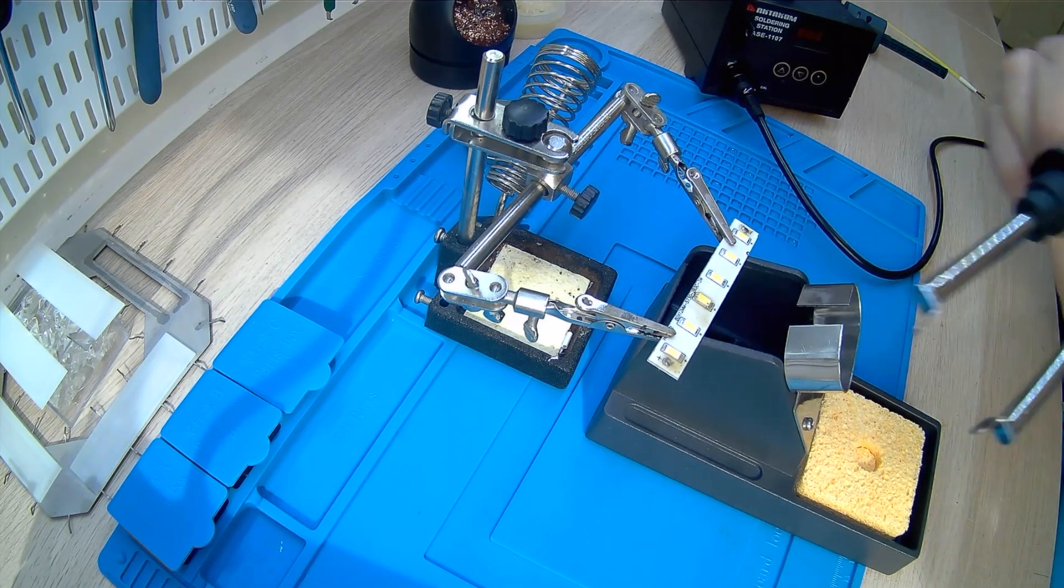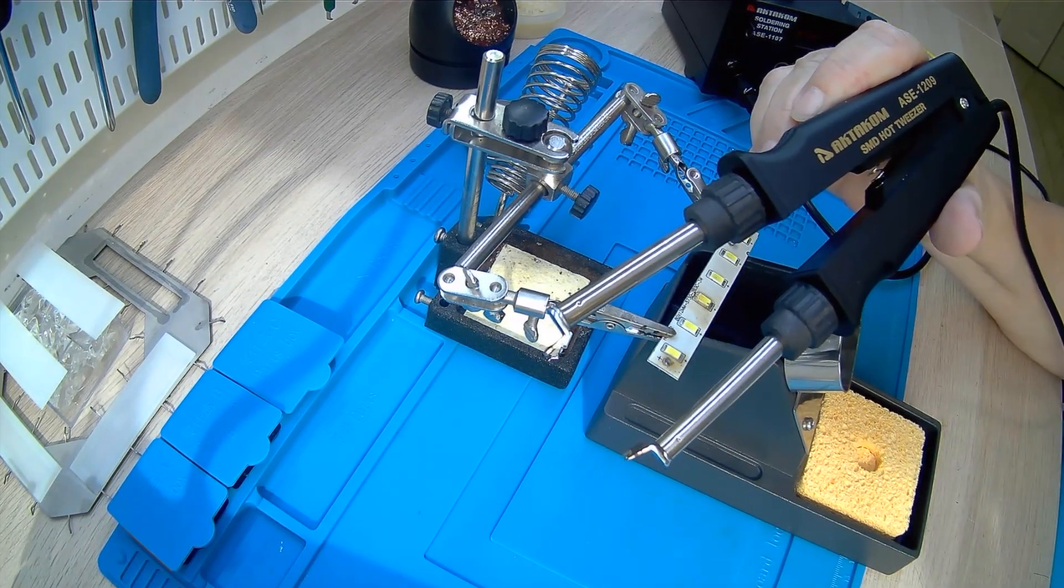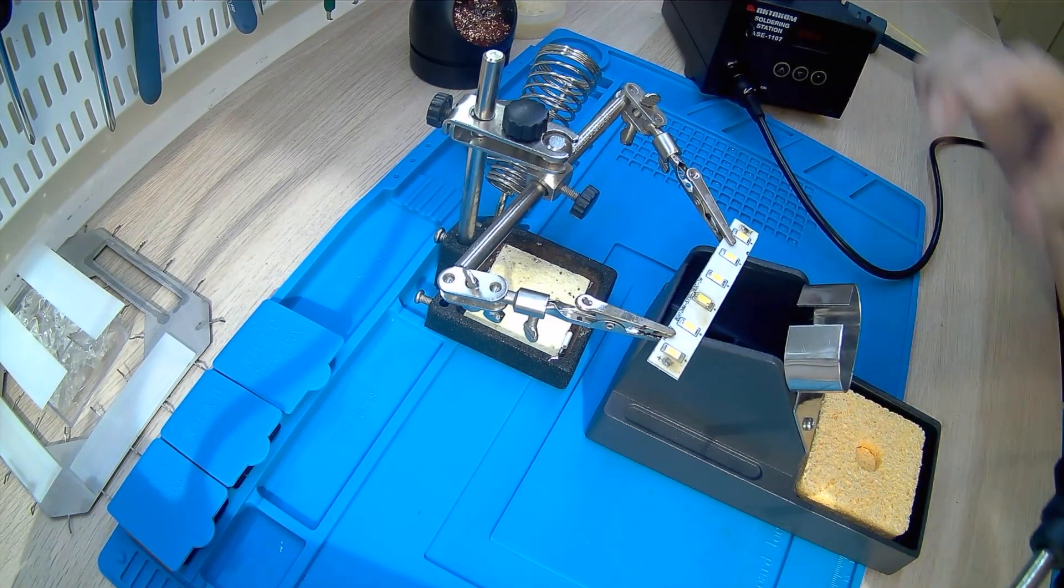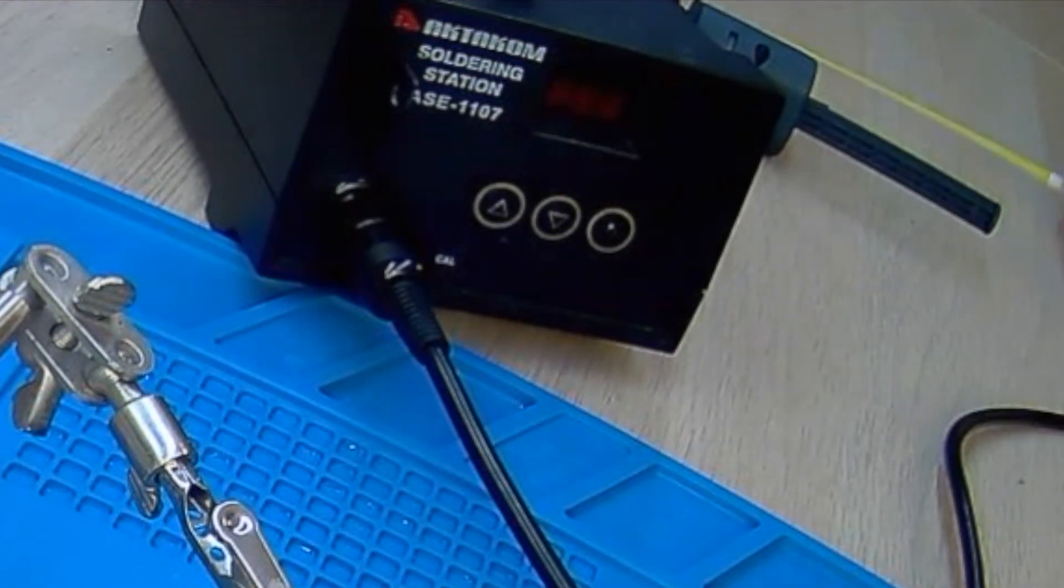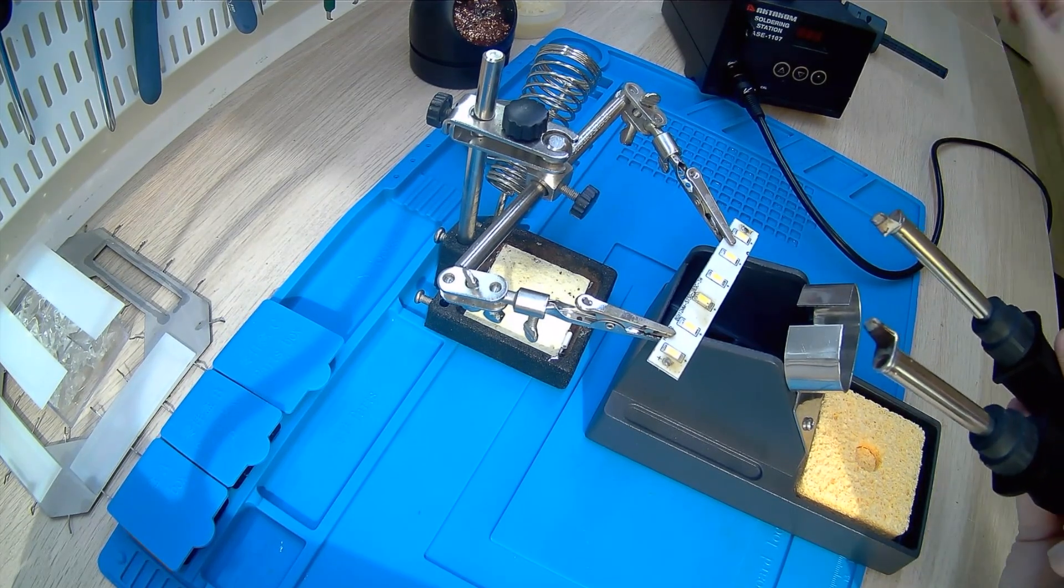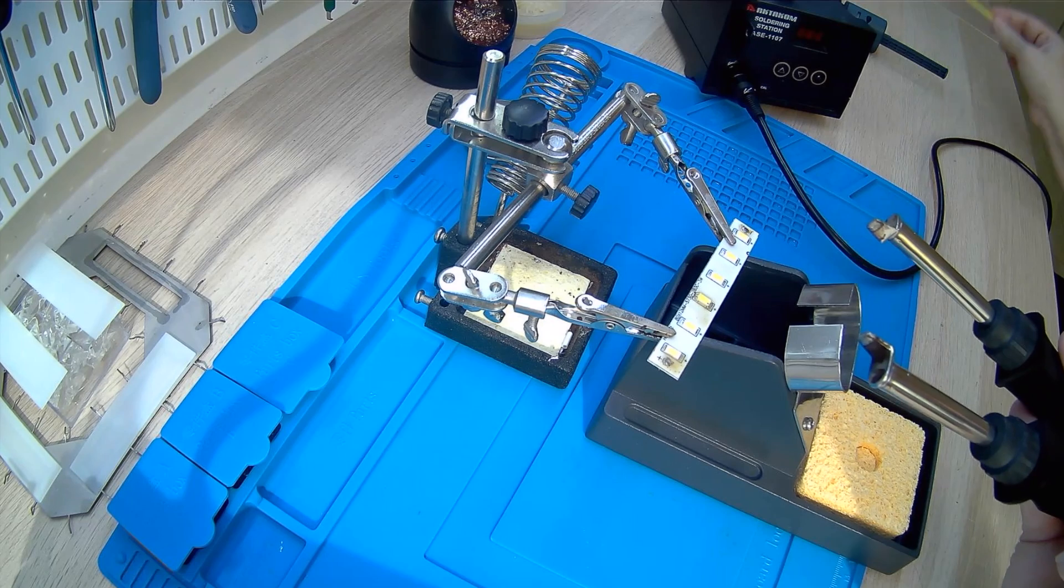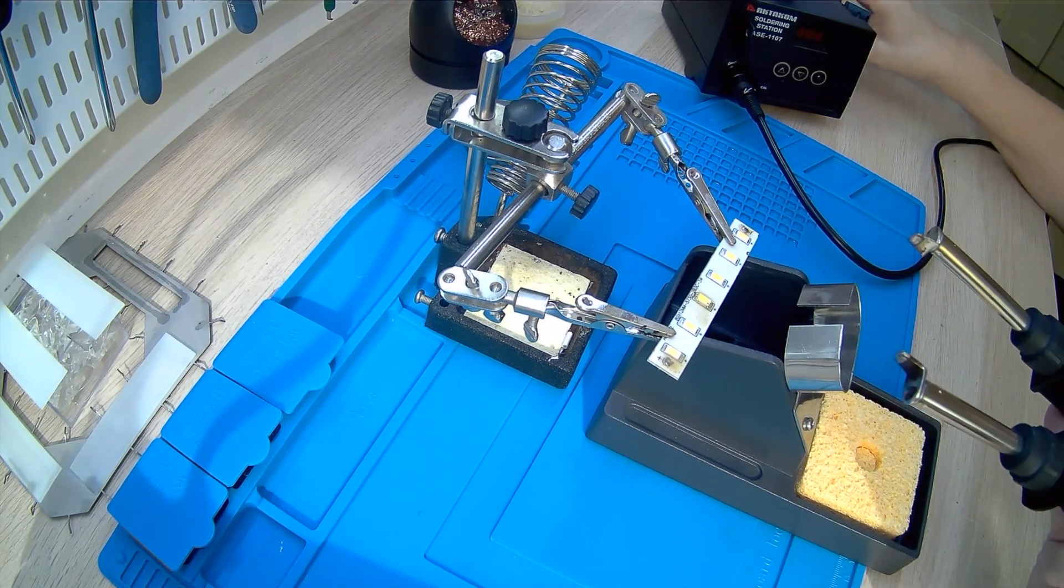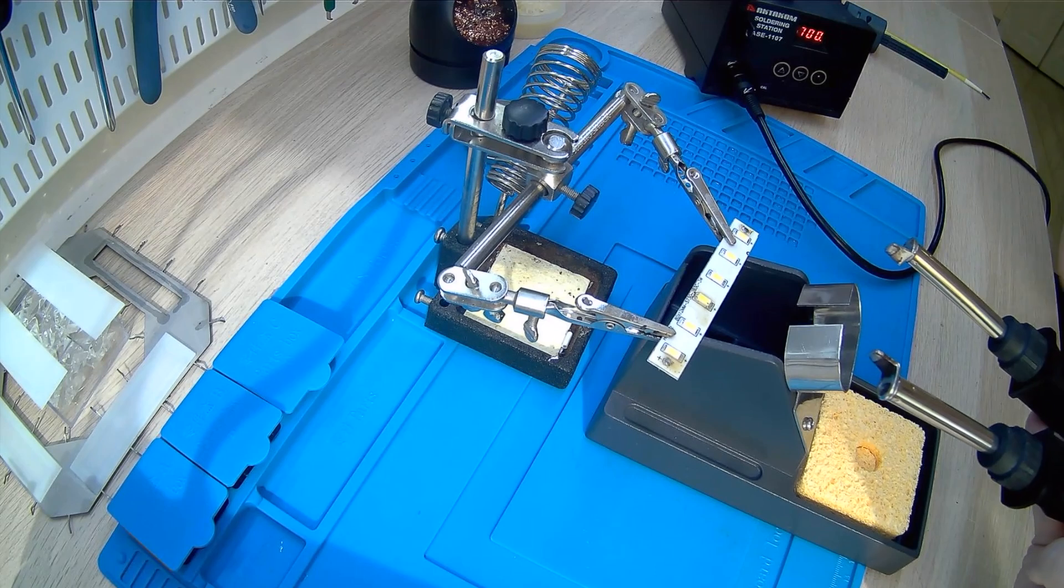To remove LEDs, we will use soldering tweezers. They connect to our AS1107 soldering station instead of a soldering iron. We talked about this soldering station in an earlier video. The link will be in the description and a pinned comment. One station for two soldering tools is very convenient. It is important to ensure that both tips of these soldering tweezers are clean.